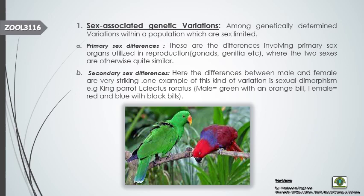The first type of genetic variation is sex-associated genetic variation. As the name suggests, these variations are sex-limited or due to differences in the gender of organisms. The first subtype is primary sex differences. Primary sex differences are due to differences in the reproductive organs — the gonads or genitalia, whether internal or external. Apart from the reproductive organs, both male and female organisms may look alike, but the difference is only in their reproductive organs.